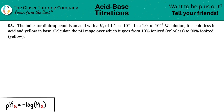Number 95. The indicator dinitrophenol is an acid with a Ka of 1.1 times 10 to the negative 4th. In a 1.0 times 10 to the negative 4th molar solution, it is colorless in acid and yellow in base. Calculate the pH range over which it goes from 10% ionized, which is colorless, to 90% ionized, which is yellow.